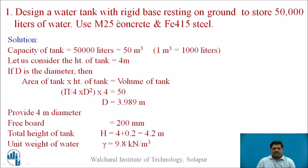For 50,000 litres capacity, the height of the tank is 4.2 metres and the diameter of the tank is 4 metres. These are the two important dimensions.